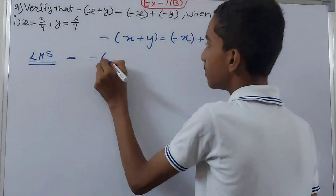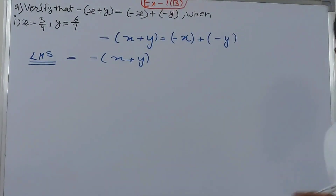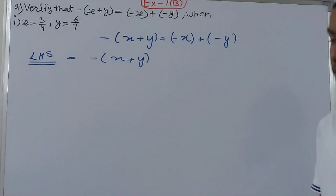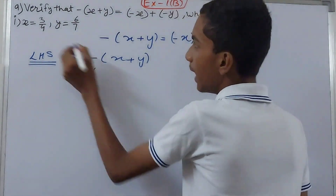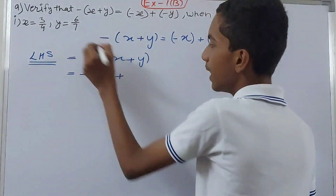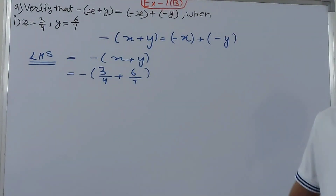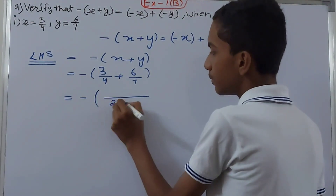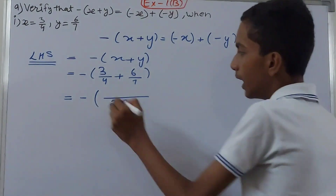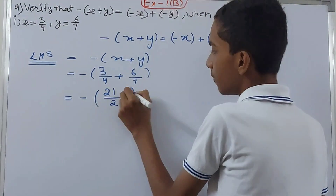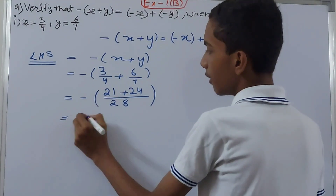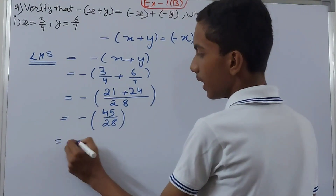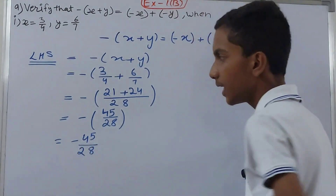On the left hand side the expression is minus of (x plus y). We put the values in: minus of (3/4 plus 6/7). Now let's add them — the LCM of 4 and 7 is 28, so 3 into 7 is 21 and 6 into 4 is 24. That gives us minus of (45/28), and opening the bracket gives minus 45/28 on the left hand side.